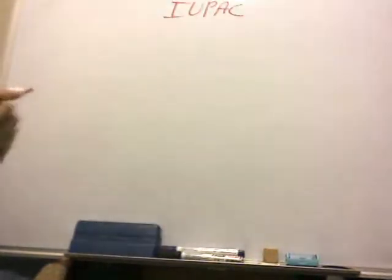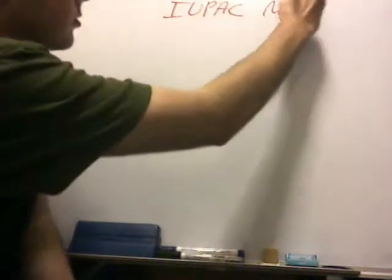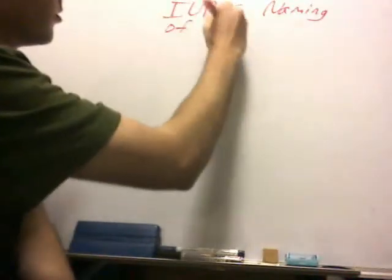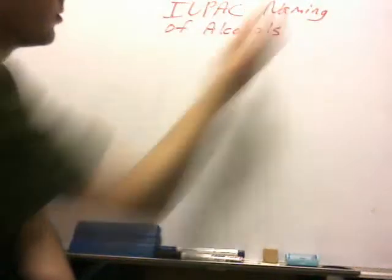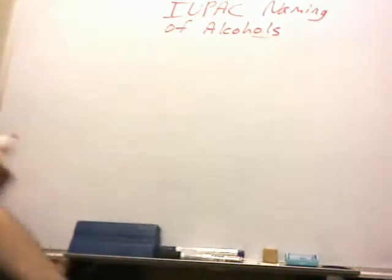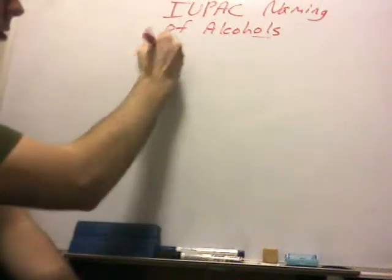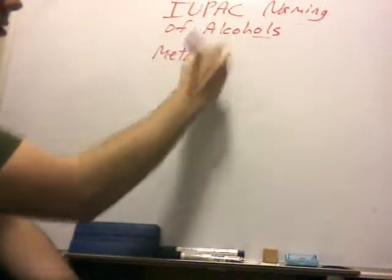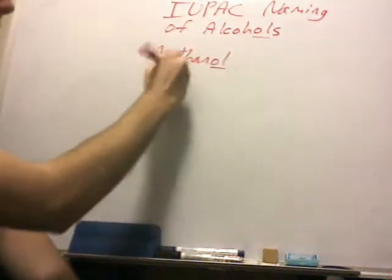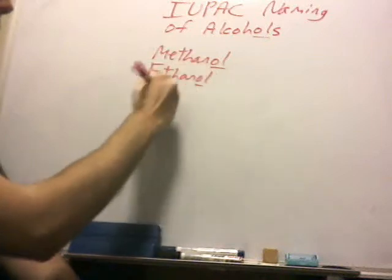Now, last time I told you that alkanes end in A-N-E, alkenes end in E-N-E, and alkynes end in Y-N-E. For alcohols, the IUPAC — International Union of Physical and Applied Chemistry — name puts an -OL at the end of the word. So starting with the most simple: methanol — you see this OL at the end — ethanol, propanol.